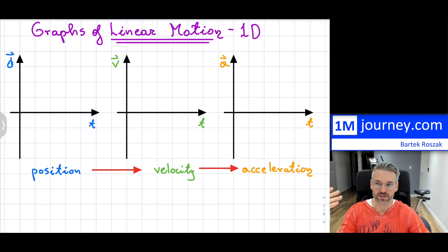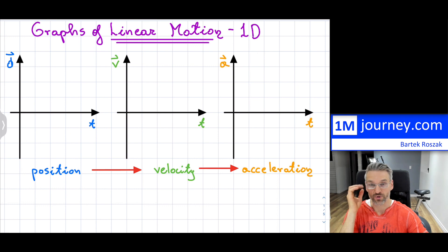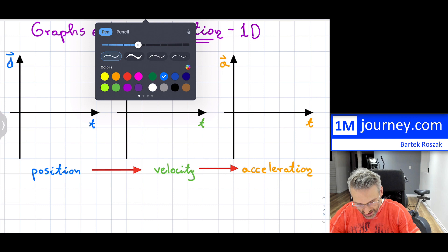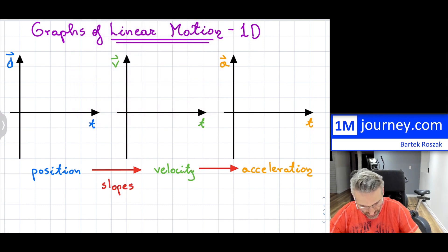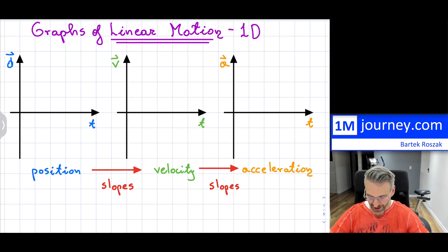The acceleration is actually the instantaneous acceleration — the acceleration at a point in time. My goal in this video is to talk about what can happen, given a certain position-time graph, and all the varieties of things that can happen in linear motion when you're studying this in introductory physics. Then, how do you transition from that position-time graph into an instantaneous velocity-time graph, and from there, into the acceleration-time graph.